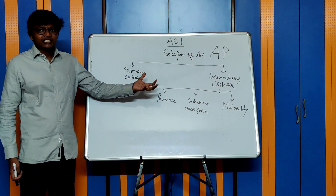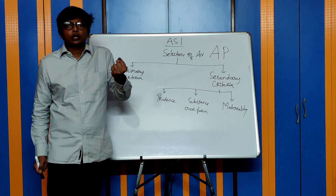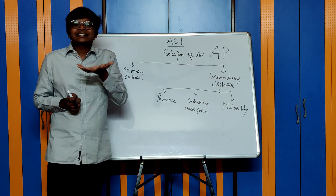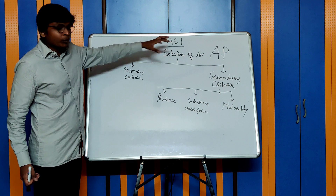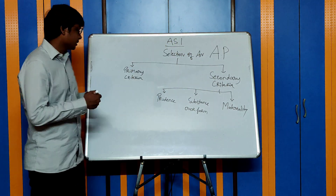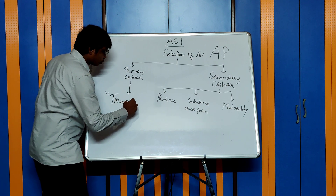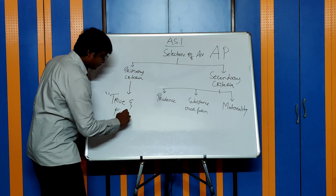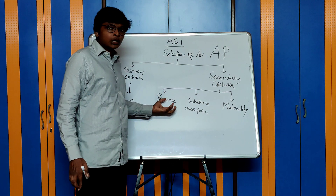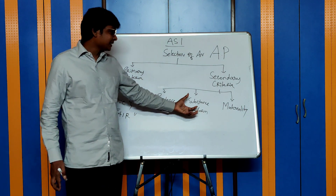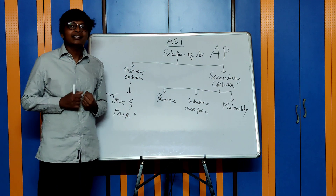Now let's see how to select an accounting policy. Assume you are the CEO of a company and you are applying these principles. There are two things: primary criteria and secondary criteria. Primary criteria says select an accounting policy which gives a true and fair view of the financial statements. Secondary criteria says select an accounting policy based on the concepts of prudence, substance over form, and materiality.